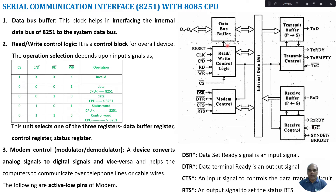There are two more blocks: Read/Write Control Logic, which determines whether we are going to write data into the transmit buffer or read data from the receive buffer. This block is also used to configure the 8251 IC — at what speed to send data, and whether we are reading or writing. This configuration is done with the help of command or data registers, activated by the A0 line of your microprocessor. The clock signal for transmission and receiving speed, as well as the reset signal, are applied from the microprocessor to the 8251 IC.